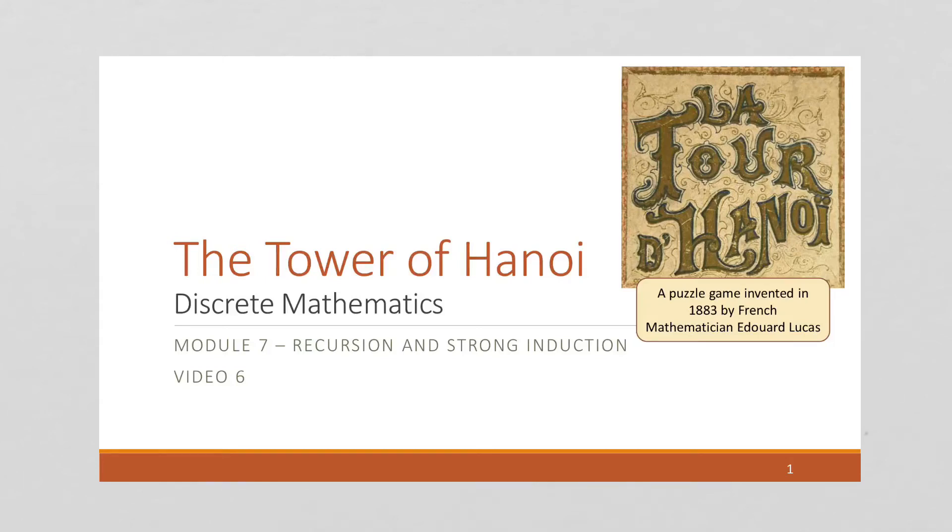In this video we're going to apply the recurrence relations from the last several videos to a popular computer science puzzle called the Tower of Hanoi problem. This is a puzzle game that was invented in 1883 by a French mathematician and is a common recursion problem in computer science.